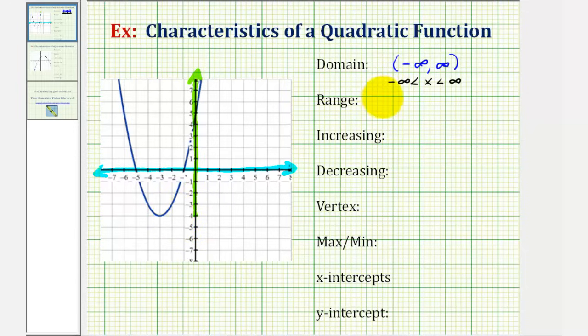Using interval notation, we can say the interval that's closed on negative four to positive infinity. Or using inequalities, we could just say y is greater than or equal to negative four. Again, these two are equivalent.